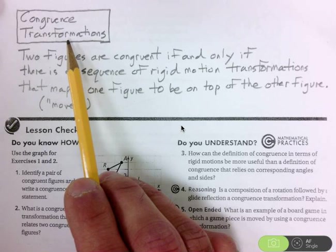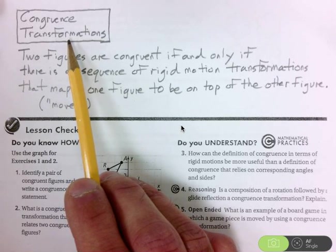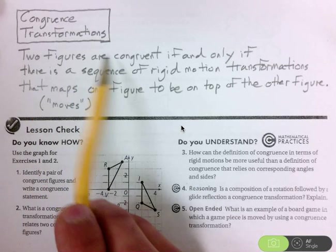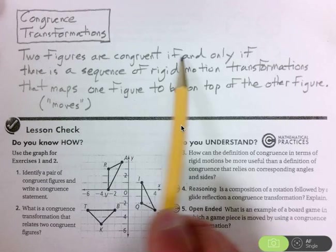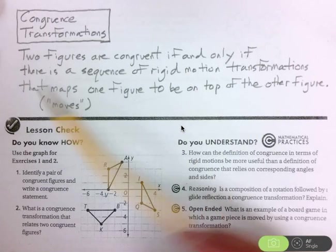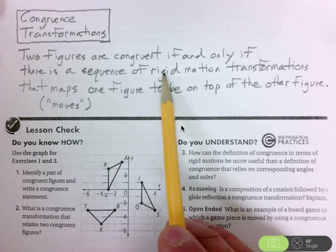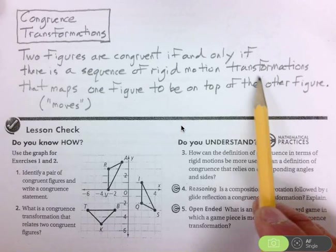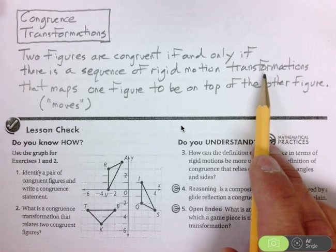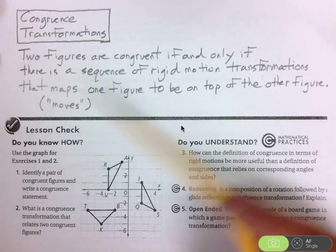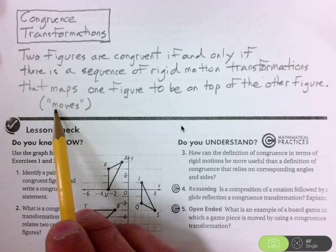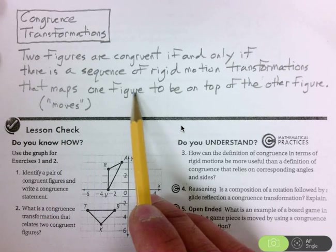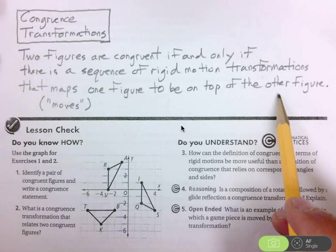This is what we mean by a congruence transformation. Two figures are congruent if and only if there is a sequence of rigid motion transformations. So that means we can use a translation, a rotation, or a reflection.